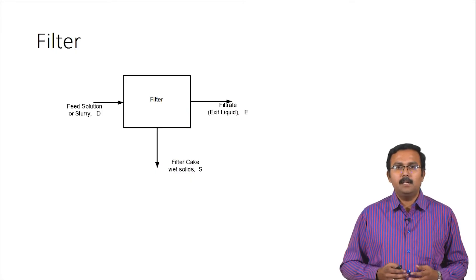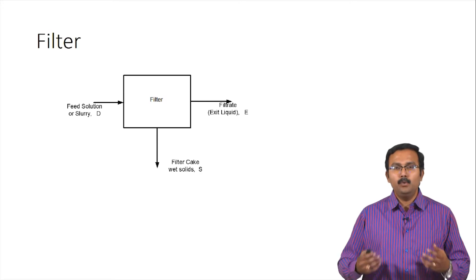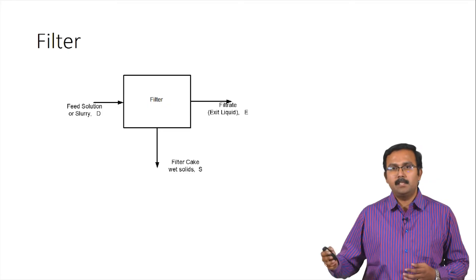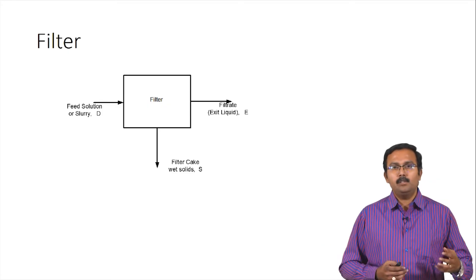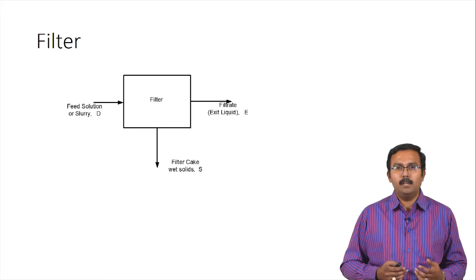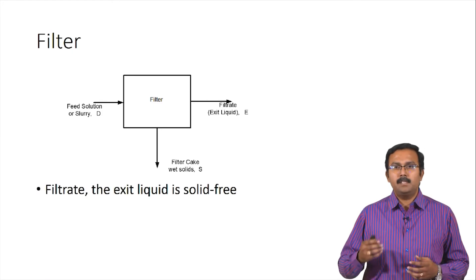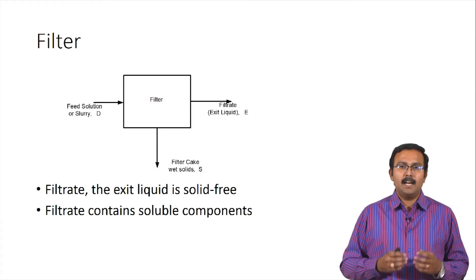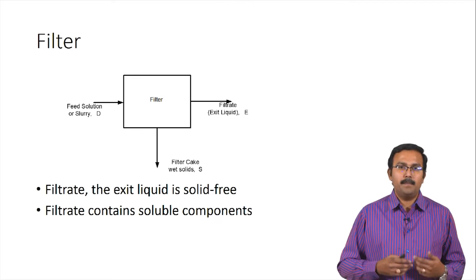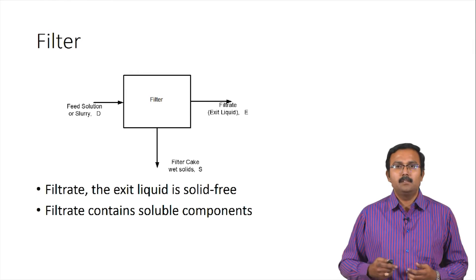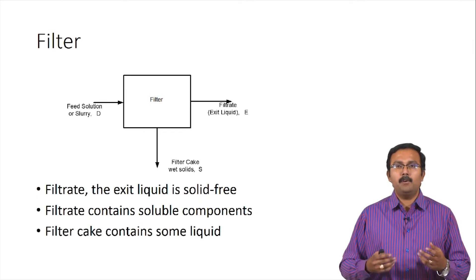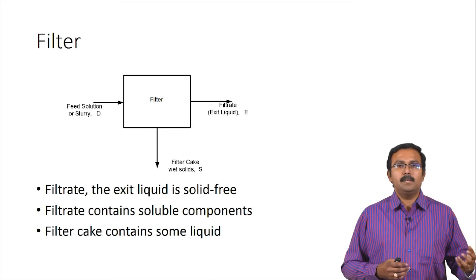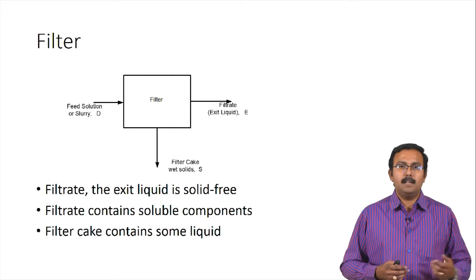A feed solution or a slurry which enters into the filter is separated into two different streams during a filtration process. The liquid stream which leaves the system is called the filtrate, and you also have a filter cake which is the wet solids leaving the system. The filtrate is solid-free and contains all the soluble components accompanying the liquid entering the filter. The filter cake can contain some of the liquids — it is not always dry.